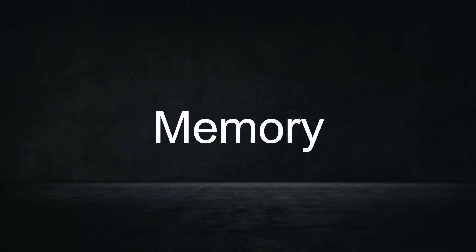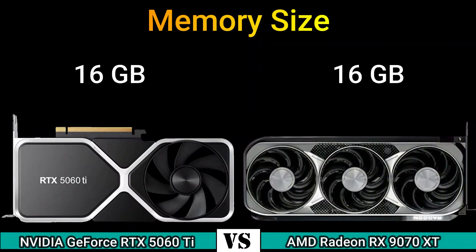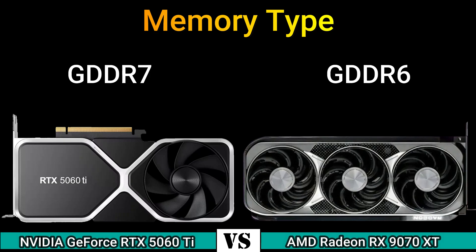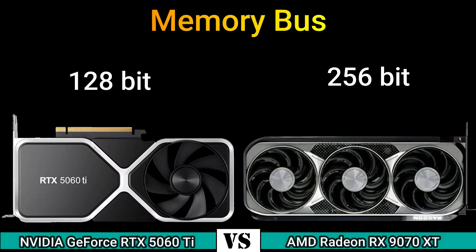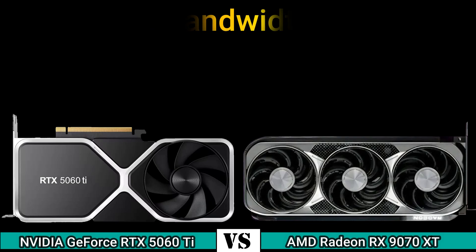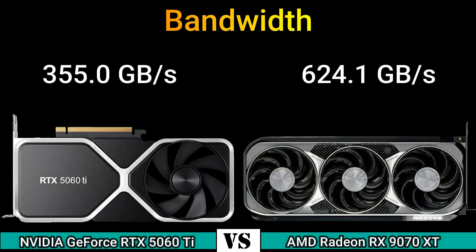Part 2 — Memory. Memory size: 16 GB. Memory type: GDDR7 and GDDR6. Memory bus: 128-bit and 256-bit. Bandwidth: 355.0 GB/s and 624.0 GB/s.